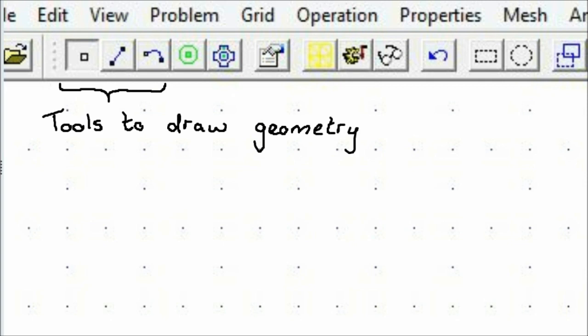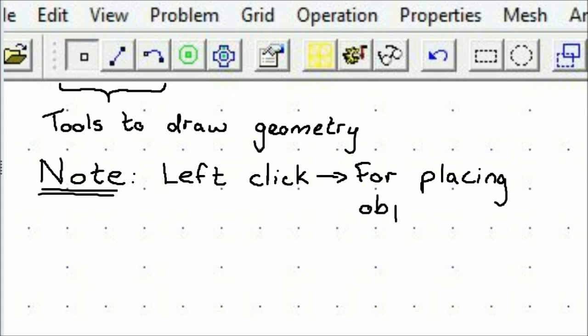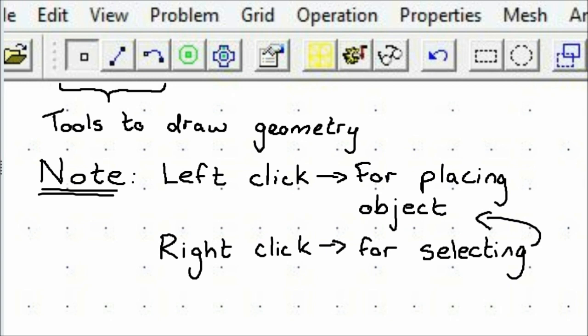A critical point to keep in mind, particularly with FEMM when drawing geometry, is that left click is to place nodes and right click is to select nodes. Similarly, selecting lines and arcs is also done with the right click, while creating them is done with the left click.